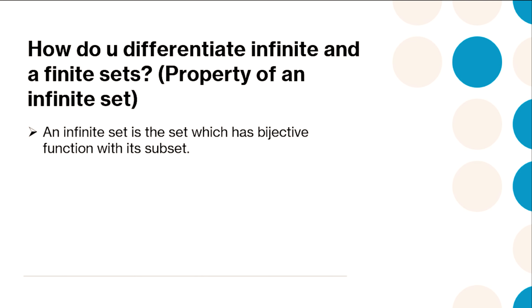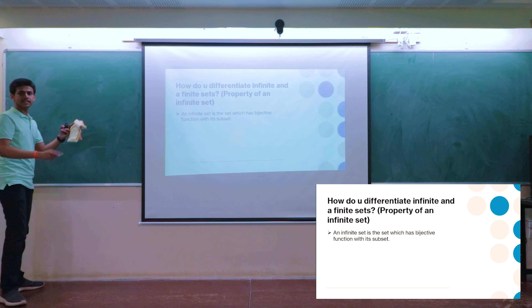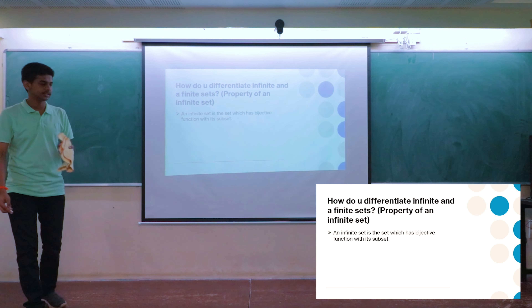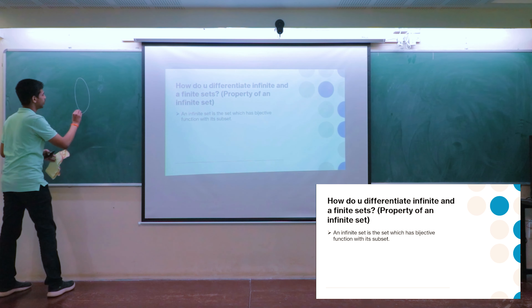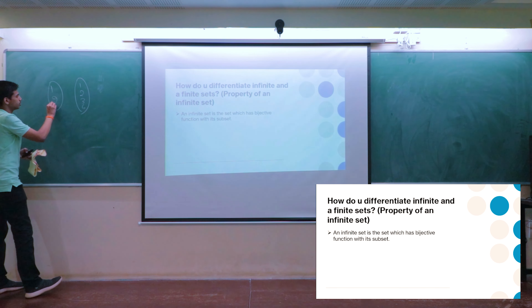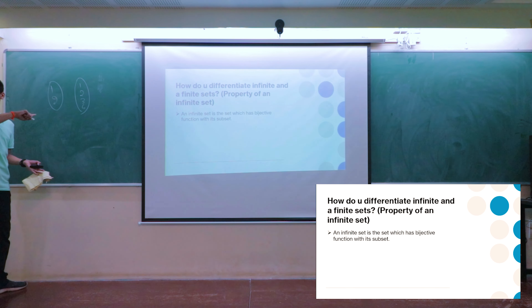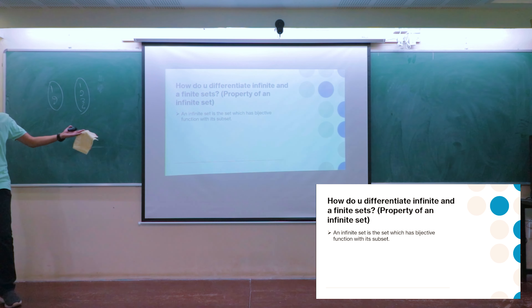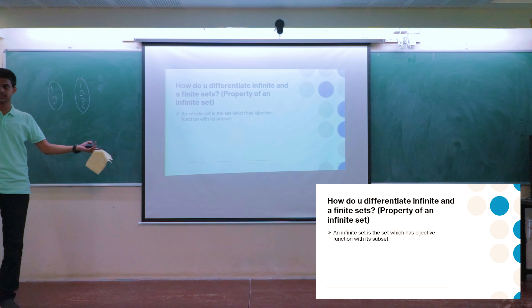This is an important property: how do you differentiate infinite and finite sets? An infinite set is a set which has a bijective function to its proper subset. In the case of a finite set, if there are four things and its subset has just two, you can't have a bijective function since the number of elements is clearly not equal. But in the infinite case, I just showed an example — whole numbers and natural numbers.